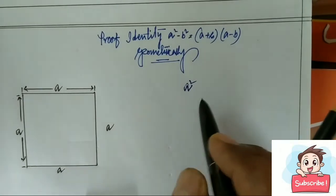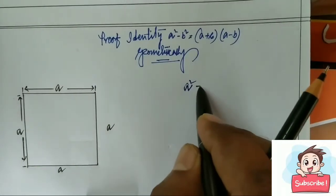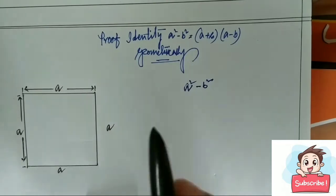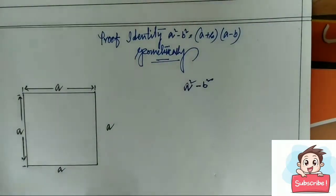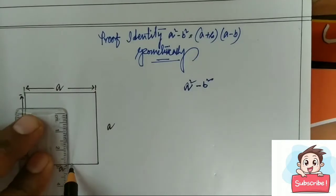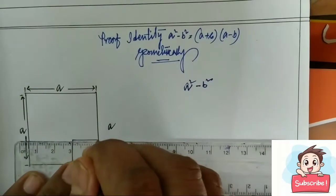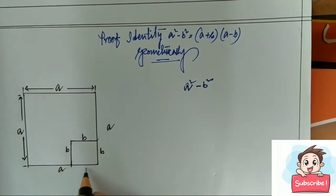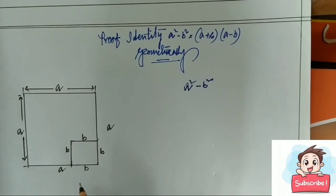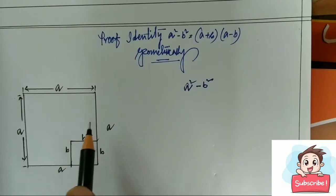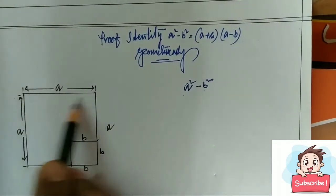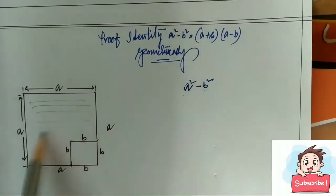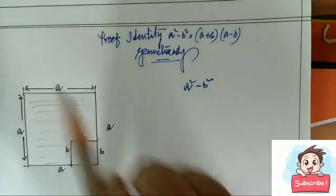Now we subtract b square from it. B square means a square with side b. Length of b is less than a. So we draw a square in this figure whose side is b. This one is b, side is b. Now what is the area of a square minus b square? This part. This part is a square minus b square.